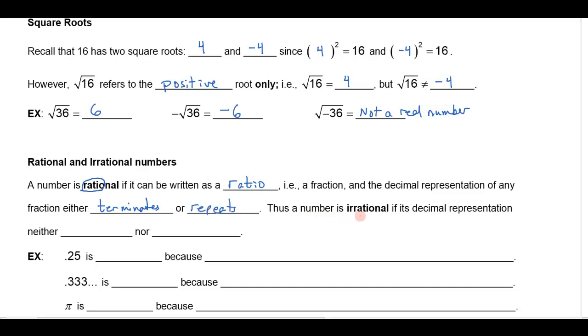So a number is going to be irrational if its decimal representation neither terminates nor repeats. So for example 0.25 that is a terminating decimal, 0.25 and it stops. So that's rational.